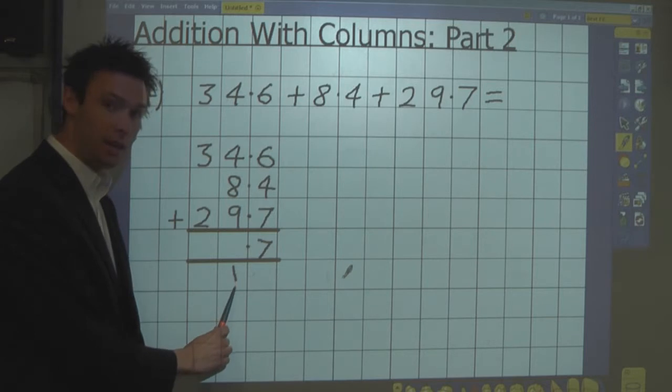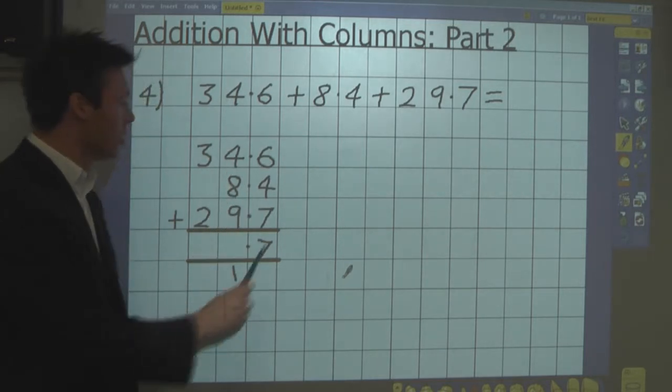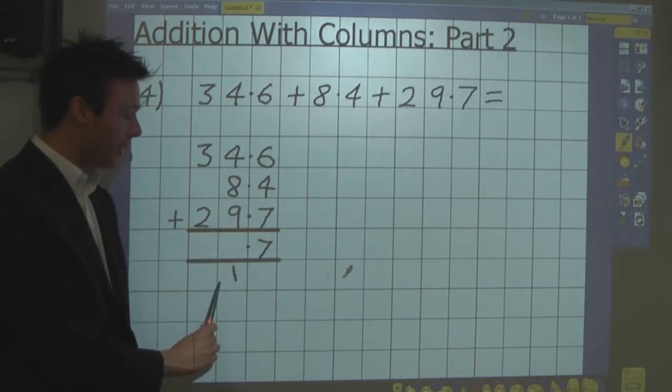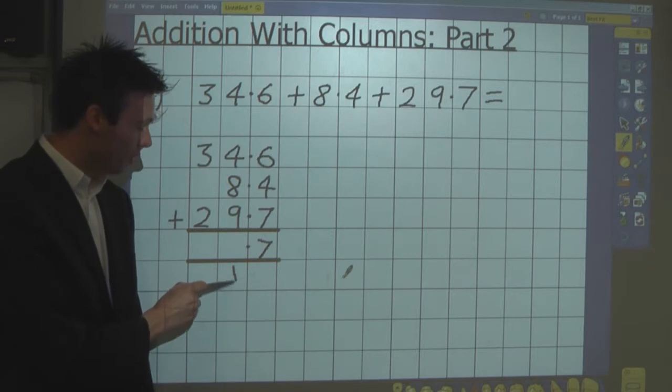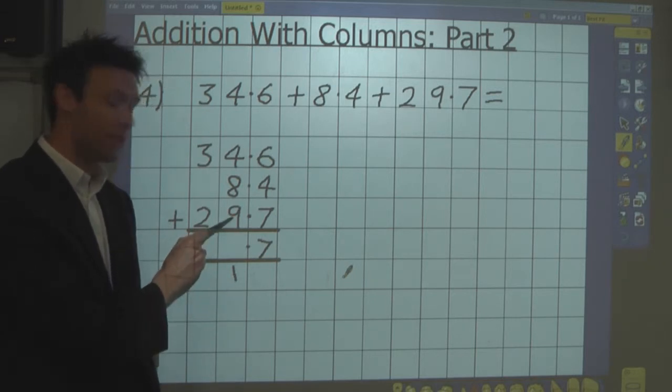But I write the one underneath here because I've also got to add these units to it. So now I'm going to add the units. Again, I use my knowledge of number bonds. I can do this in any order. So if I add the 1 to the 9 first, that gives me 10.